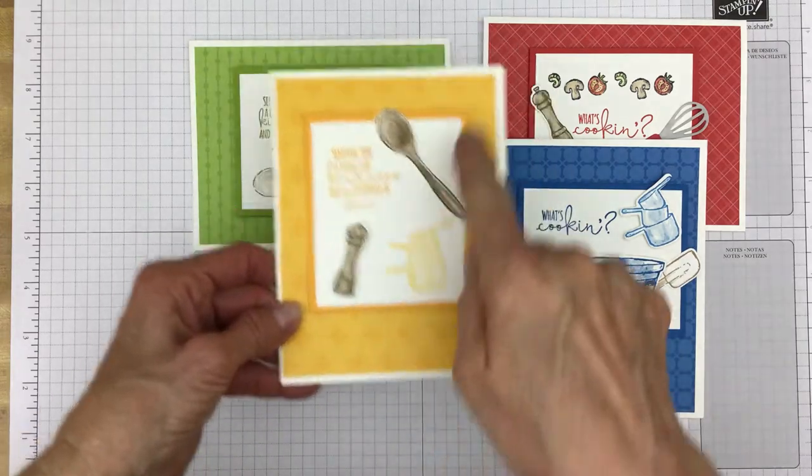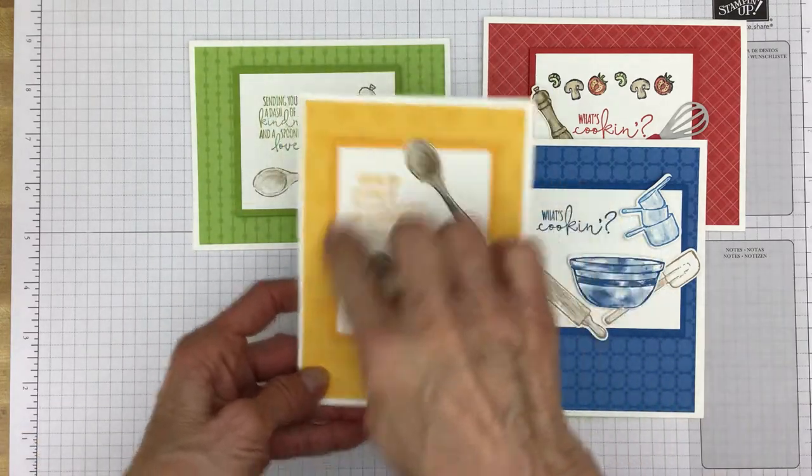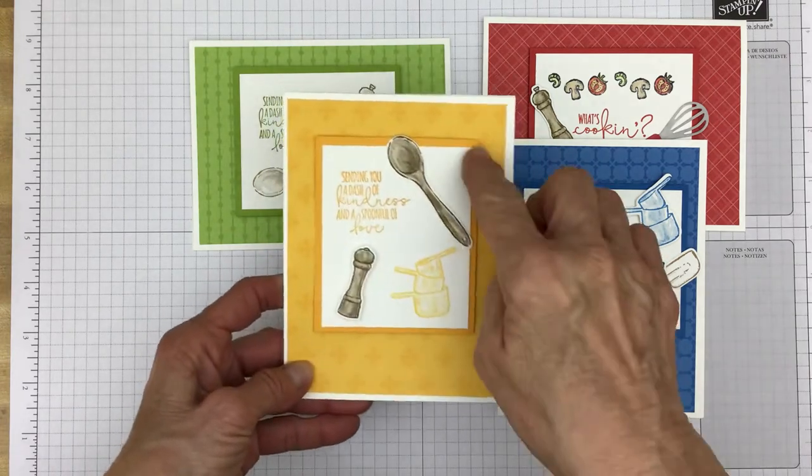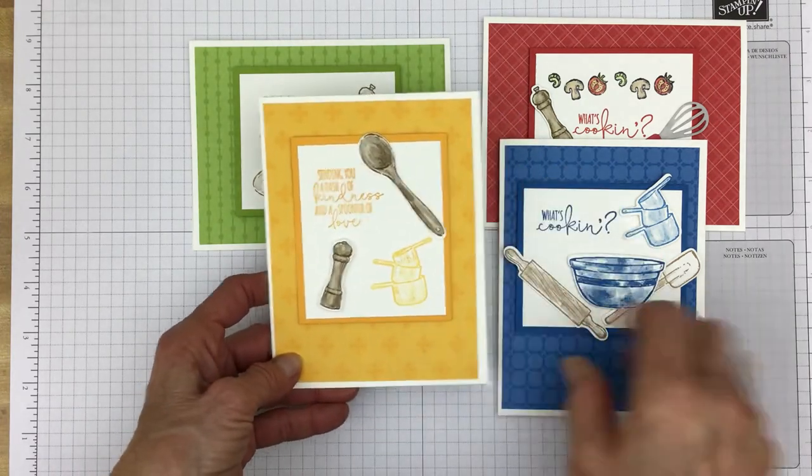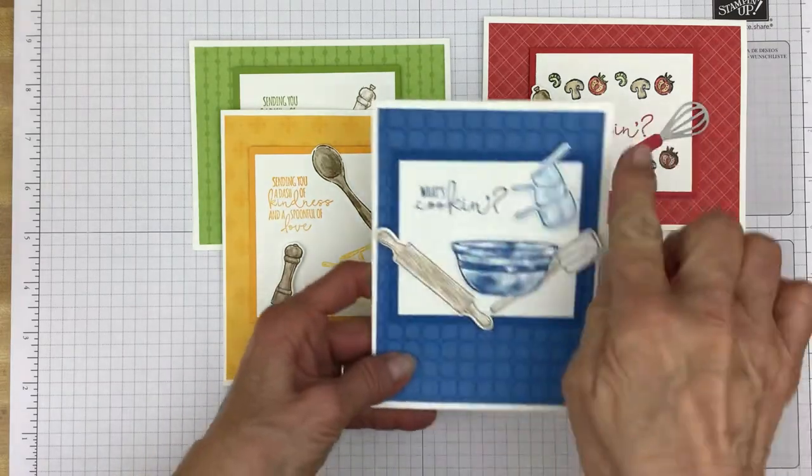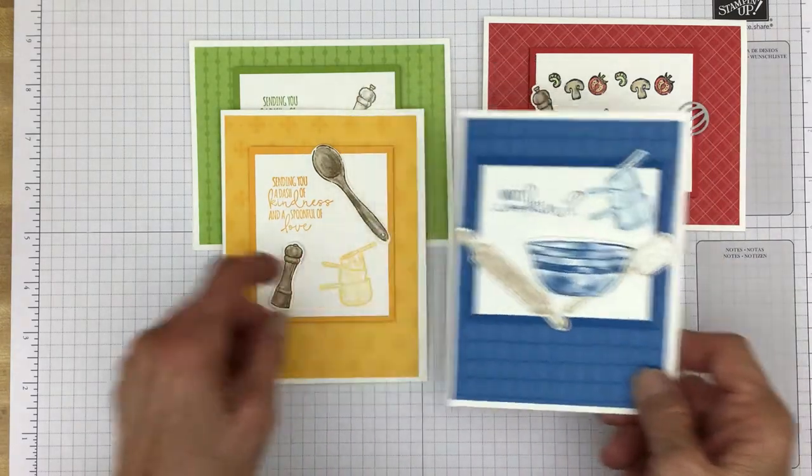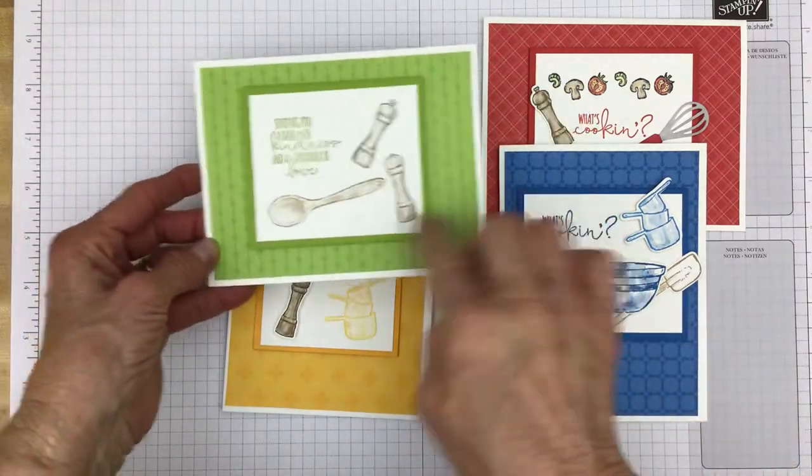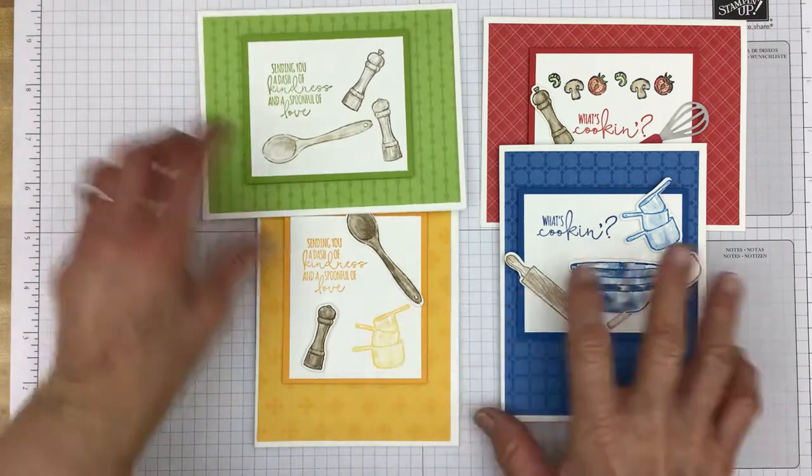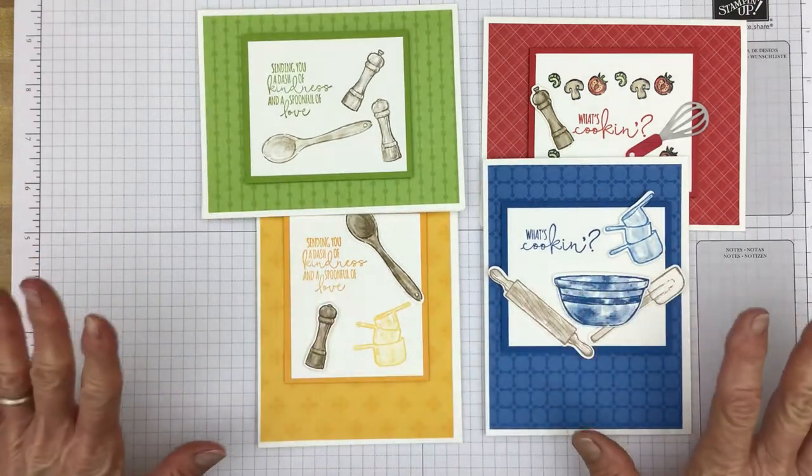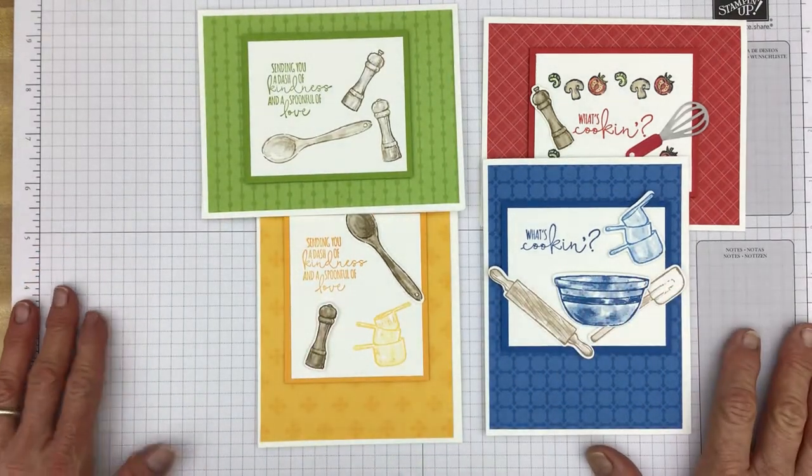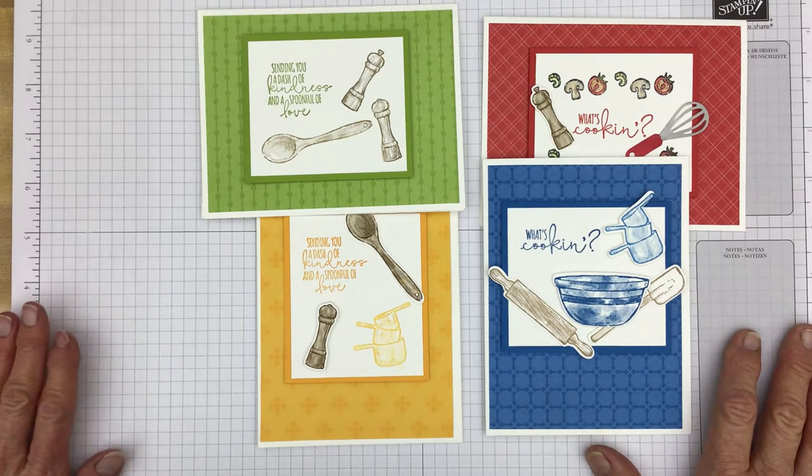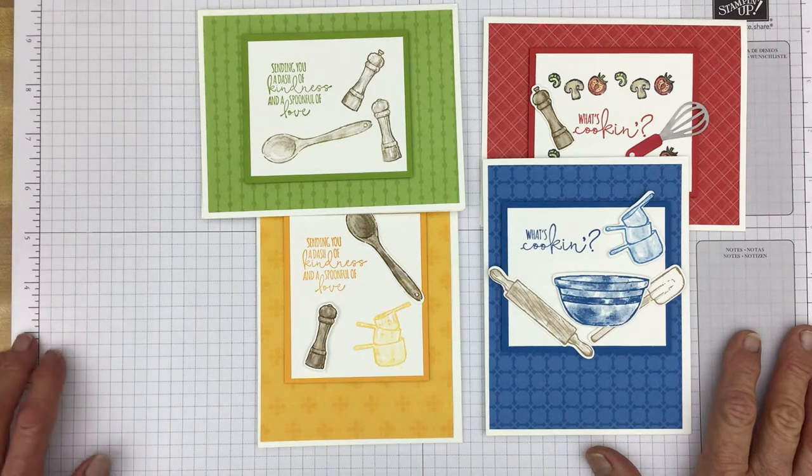As you can see you can put the focal image in a portrait orientation or in a landscape orientation and your card could be the portrait orientation or a landscape orientation. Doesn't matter, the measurements will all be the same. And all the measurements and supply lists for these cards will be on my blog. And down below this video in the description you will find the link to that blog.